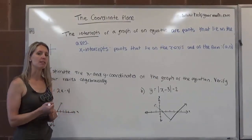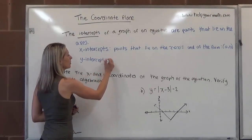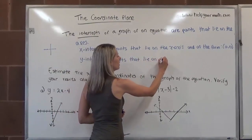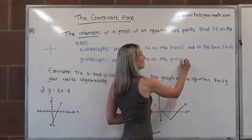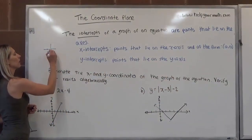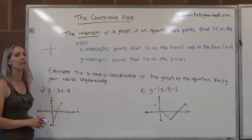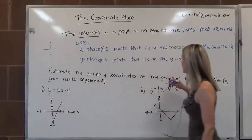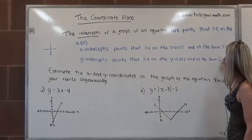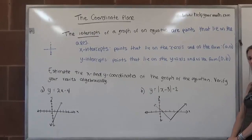The other type of intercept we're going to talk about is the y-intercept of a graph. The y-intercepts of a graph are points that lie on the y-axis. Going back to the graph, points that lie on the y-axis could be here, or here, or here — all of those points have something in common. All of those points have the same x-coordinate. So we can say that any y-intercept is of the form zero comma b.